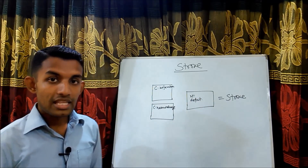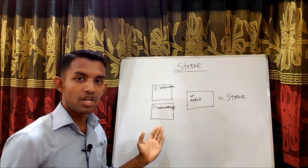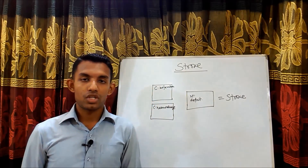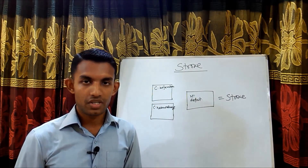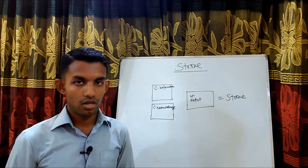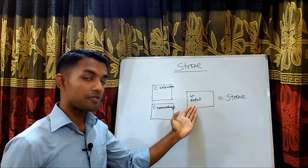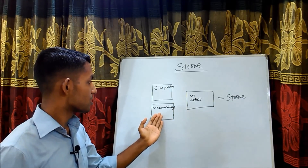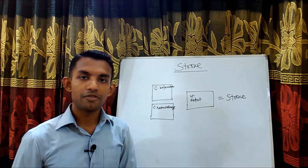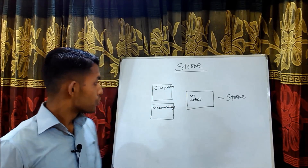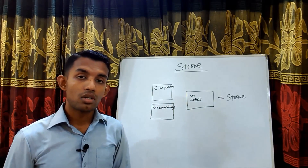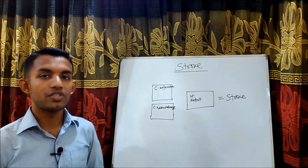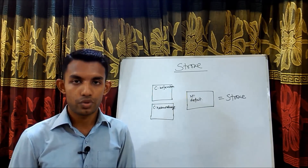There are two terms: cerebral infarction and cerebral hemorrhage. Cerebral infarction may be due to inadequate blood supply to a part of the brain. If it causes neurological deficit, it will be called a stroke. And also, cerebral hemorrhage — if it causes neurological deficit — it will be called a stroke. So cerebral infarction due to inadequate blood supply, or cerebral hemorrhage, if either causes neurological deficit, it will be called a stroke.